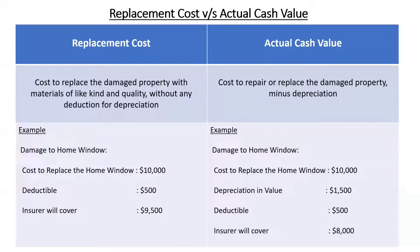Now let's see what is meant by actual cash value. Actual cash value is the cost to repair or replace the damaged property minus depreciation. Let's take the same example where your home window got damaged and the overall cost to replace it is ten thousand dollars, but it got damaged after three to four years. So typically what happens is the insurance company takes depreciation into account.